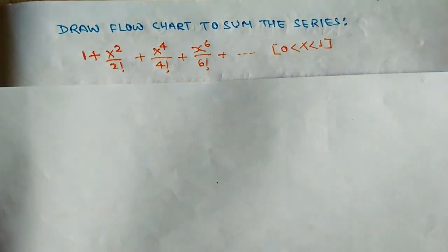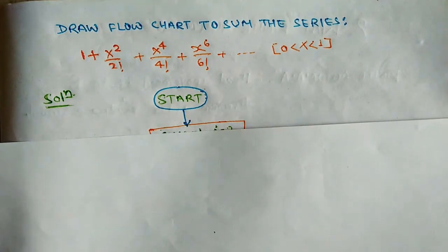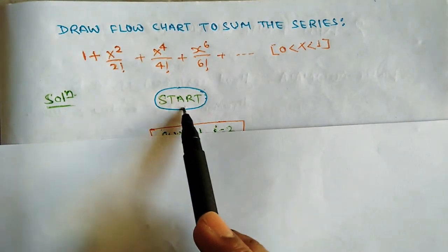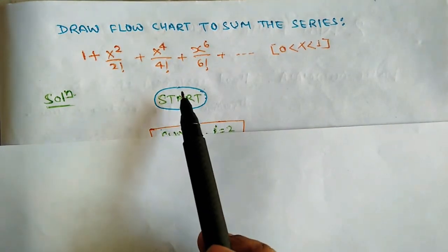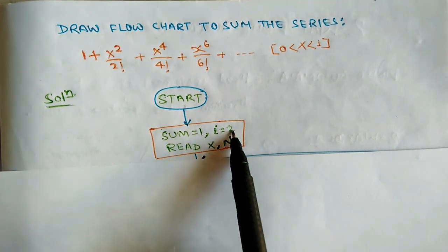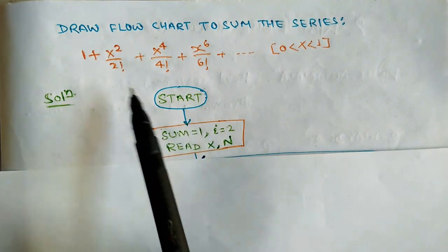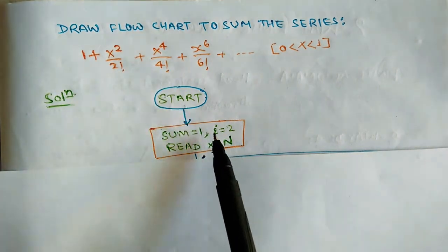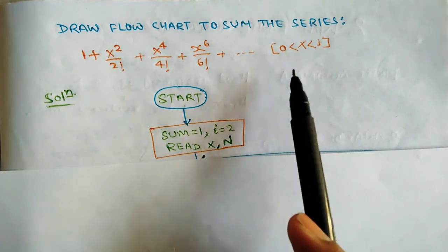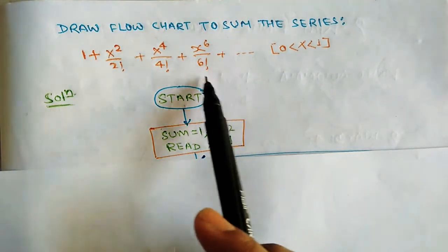So let's draw the flowchart for this question. We start with the start symbol. Now we have to initialize: sum = 1, and i = 2. The variable i represents iteration, because we can see that the exponents go 2, then 4 — there is always a gap of 2. We will also read x, which lies between 0 and 1.